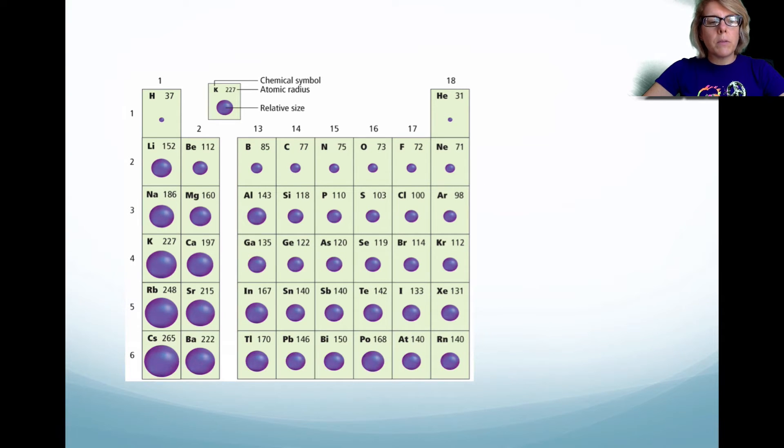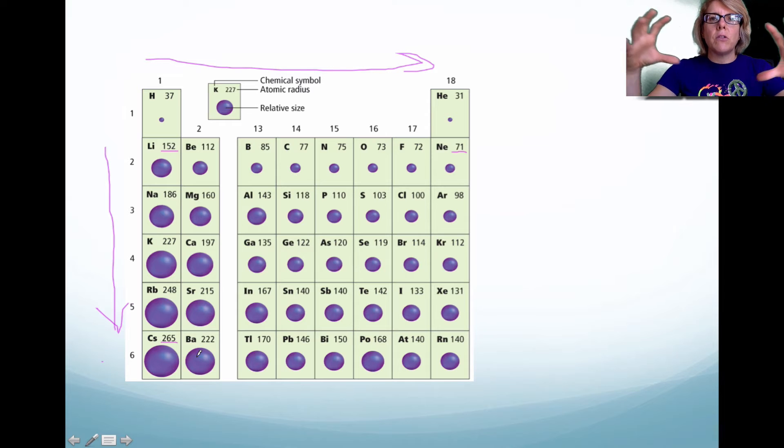The reason why I show you this picture is I just want to show you some of the general trends with atomic radii. As you go from left to right, the atomic radii does decrease. Notice you start out with 152 for lithium, and then you end up with 71 for neon. So as you increase the number of protons in that nucleus, the outer electrons or the valence electrons are strongly attracted to that positive charge. Now, when you go down a group, notice that the atomic radii actually increases. So you go from 152 to 265. That makes sense because you're adding more energy levels. Therefore, the atom is getting bigger.